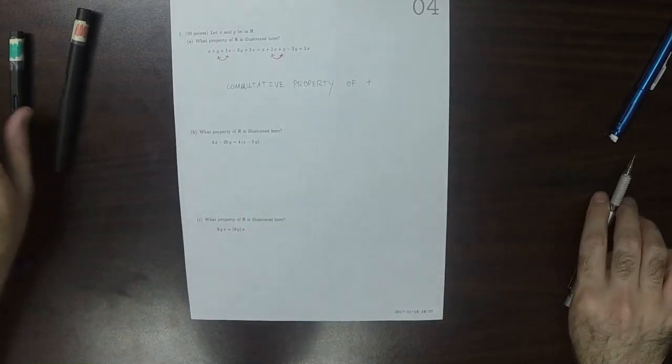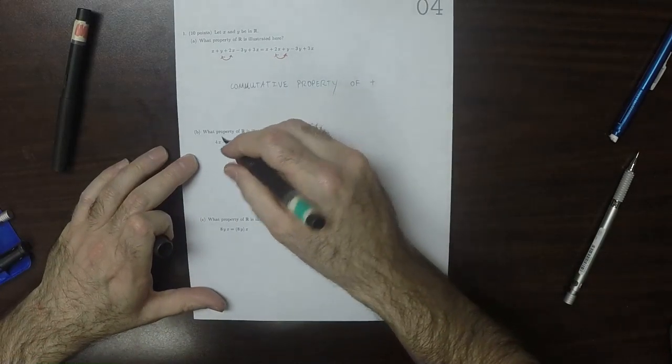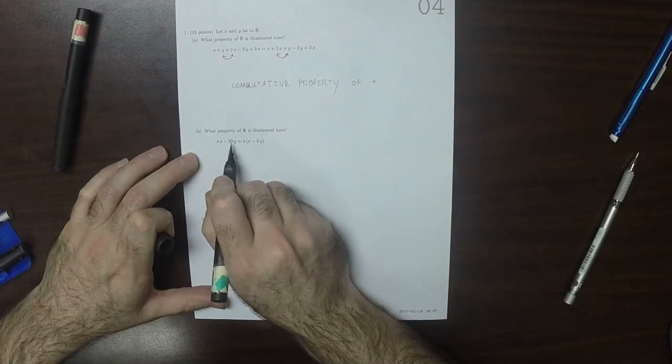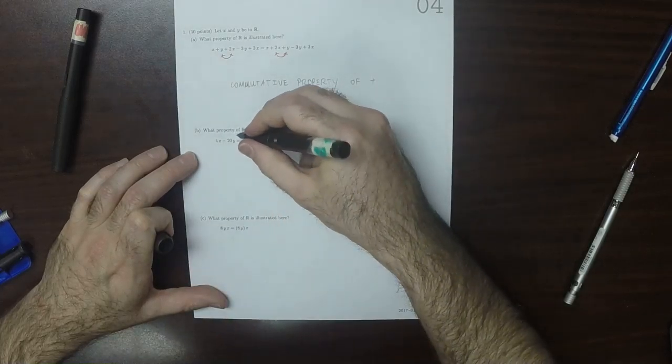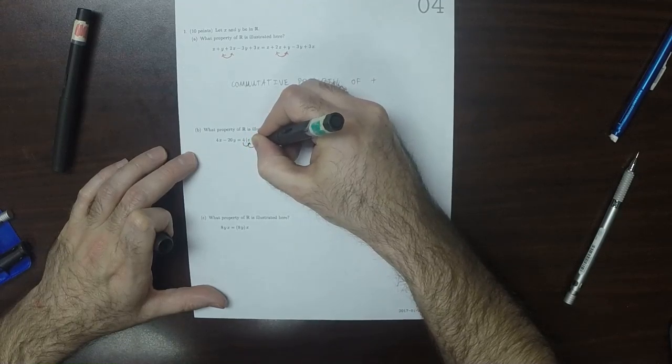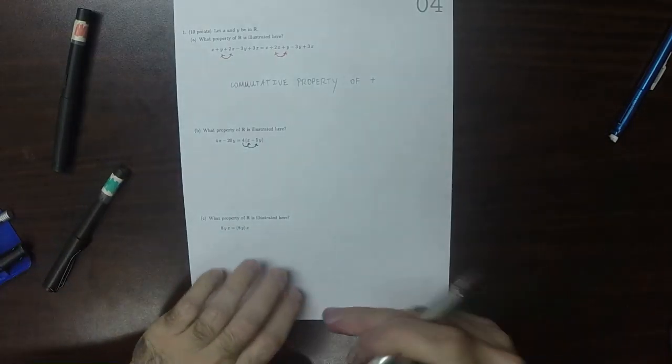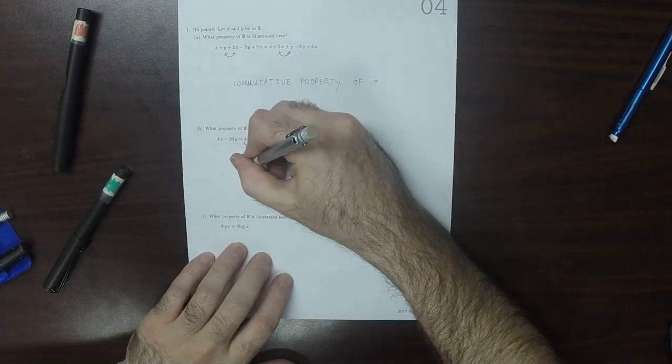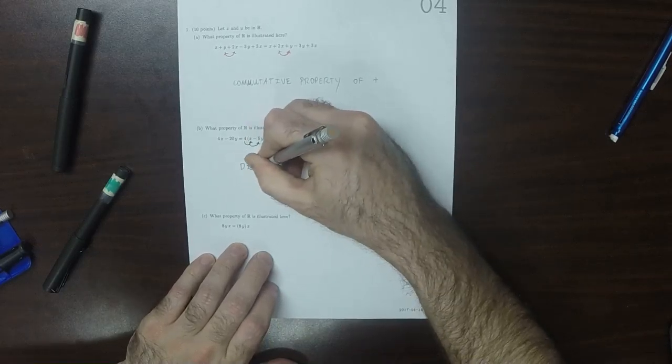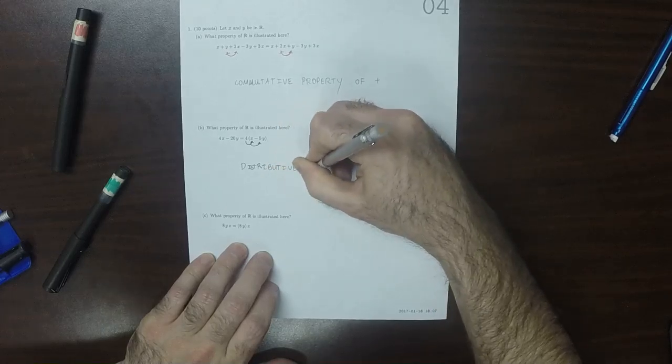Here, what's happened is you can see that there's a common factor of 4 here. There's a 4 and that has five 4's. So if we were to distribute this here, we'd have the left-hand side. So this is the distributive property.